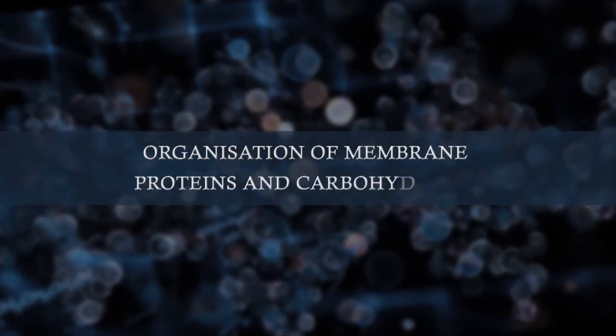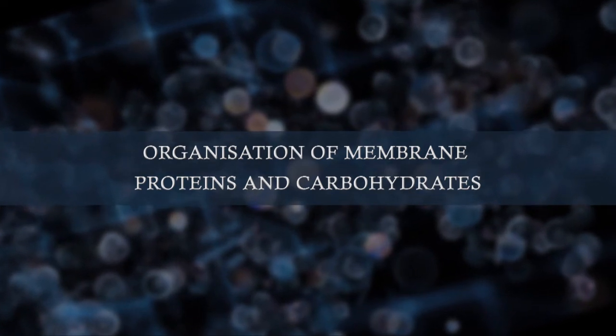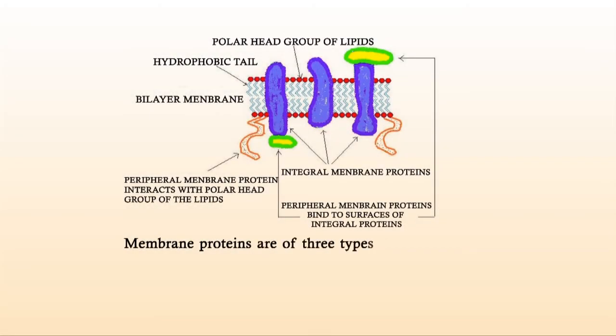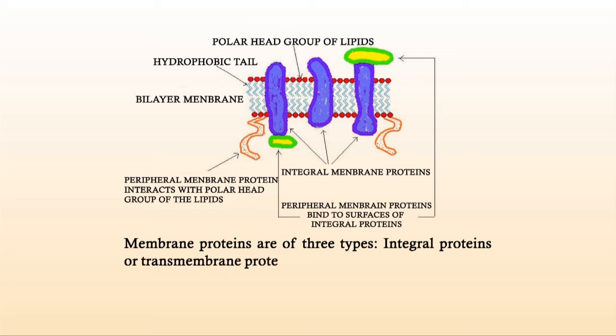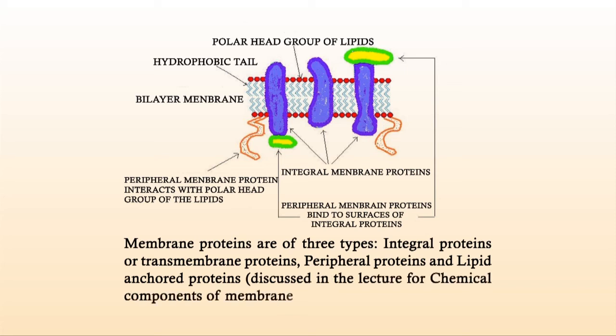Next, let us take up the organization of membrane proteins and carbohydrates. The distribution of proteins in the basic bilayer structure varies in different membrane types depending upon the cell type and subcellular location of the membrane. For example, the inner mitochondrial membrane is made up of 76% proteins, while the myelin membrane contains only 18% proteins, where the high phospholipid content allows myelin to electrically insulate nerve cells from their environment. Membrane proteins are of three types: integral proteins or transmembrane proteins, peripheral proteins, and lipid-anchored proteins.